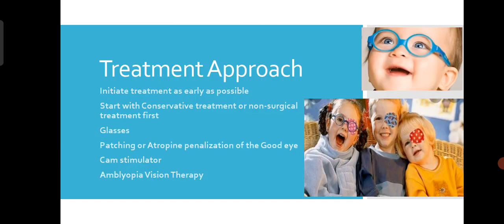The treatment approach should be initiated as early as possible. We should go with conservative, non-surgical treatment first. We can give glasses or contact lenses, patch the better-seeing eye, and make the child work with the Amblyopic eye. If the child doesn't want to wear a patch, we can do atropine penalization — using atropine eye drops as the clinician suggests. We can also give a frosted glass over the good eye and make the Amblyopic eye work. We can also do Amblyopia vision therapy.